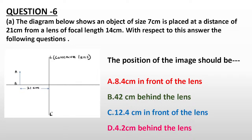So the position of the image should be dash. Give me the answer. The correct answer is A, that is 8.4 cm in front of the lens.